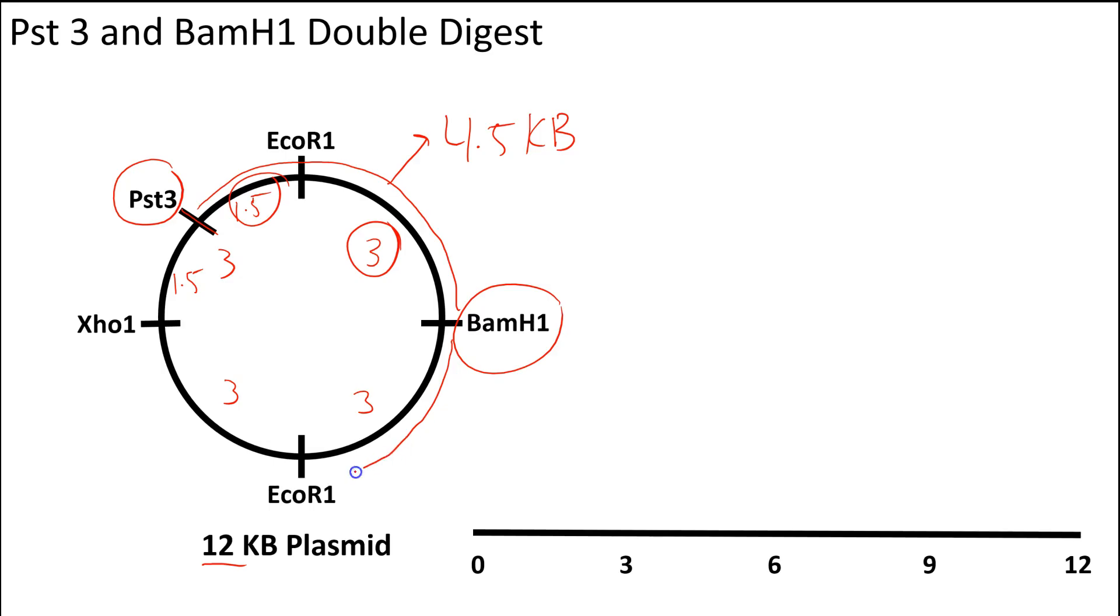You're also going to get another larger fragment, that being the BamH1 all the way back around to this Pst3. So by my math, you get 3 KB here, 3 KB here, 1.5 here for a total of 7.5 KB. Now let's depict that on our map here. So for the 7.5 KB, you're going to get a fragment basically of that size. And then for the additional 4.5 KB, you're going to get a fragment of that size. So that's your one fragment, there's your second fragment. To check your answer, make sure all fragments add up to the total plasmid size. So here we have two fragments. One is 4.5 KB, the other is 7.5. So the math seems to add up for us getting to 12 KB.